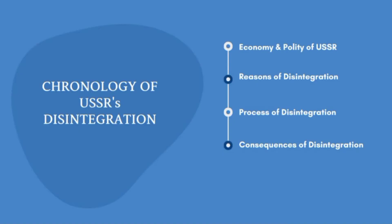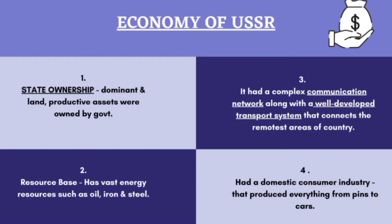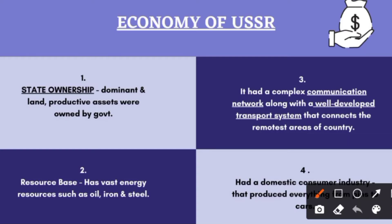Now we will see the chronology of our chapter. First, we will discuss the economy and politics. Then we will see the reasons why the USSR disintegrated and what the process of that disintegration was. At last, we will examine its consequences. So let's start with the economy of the USSR.